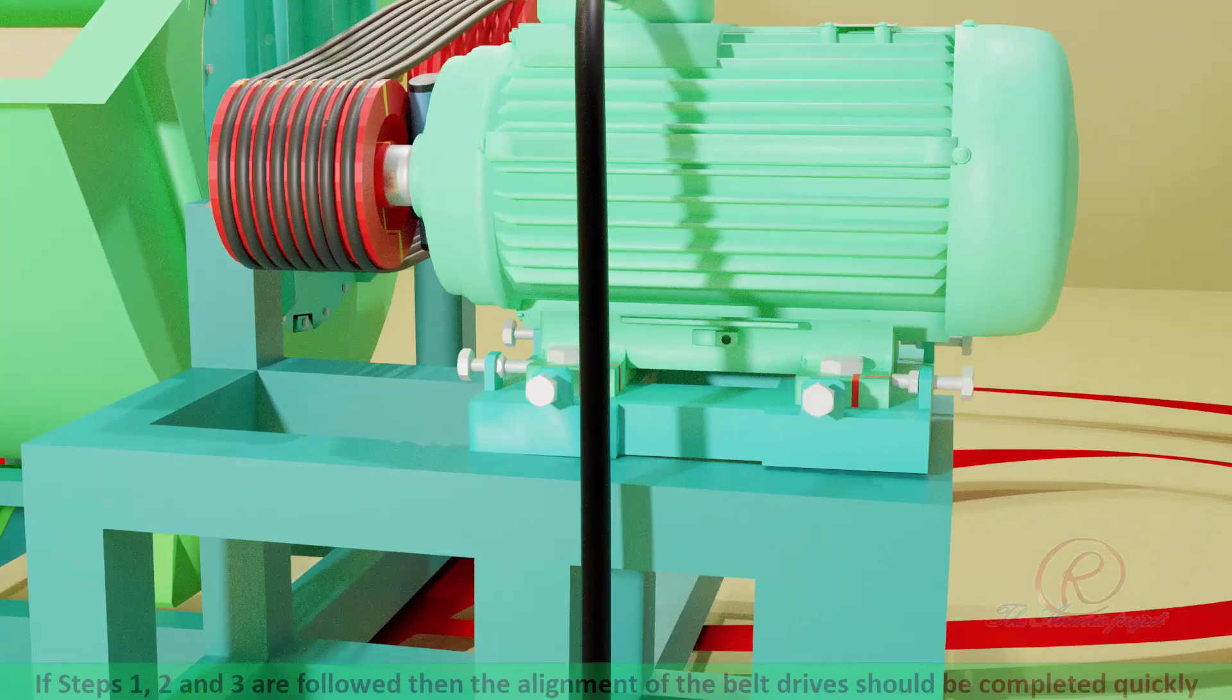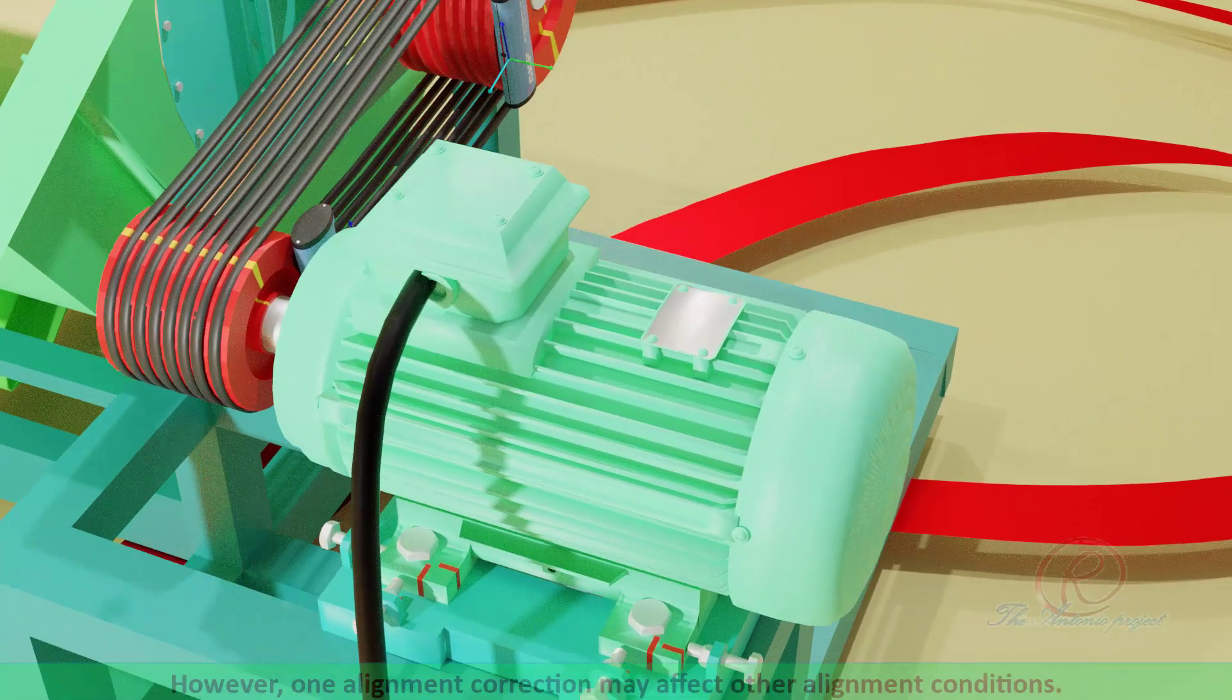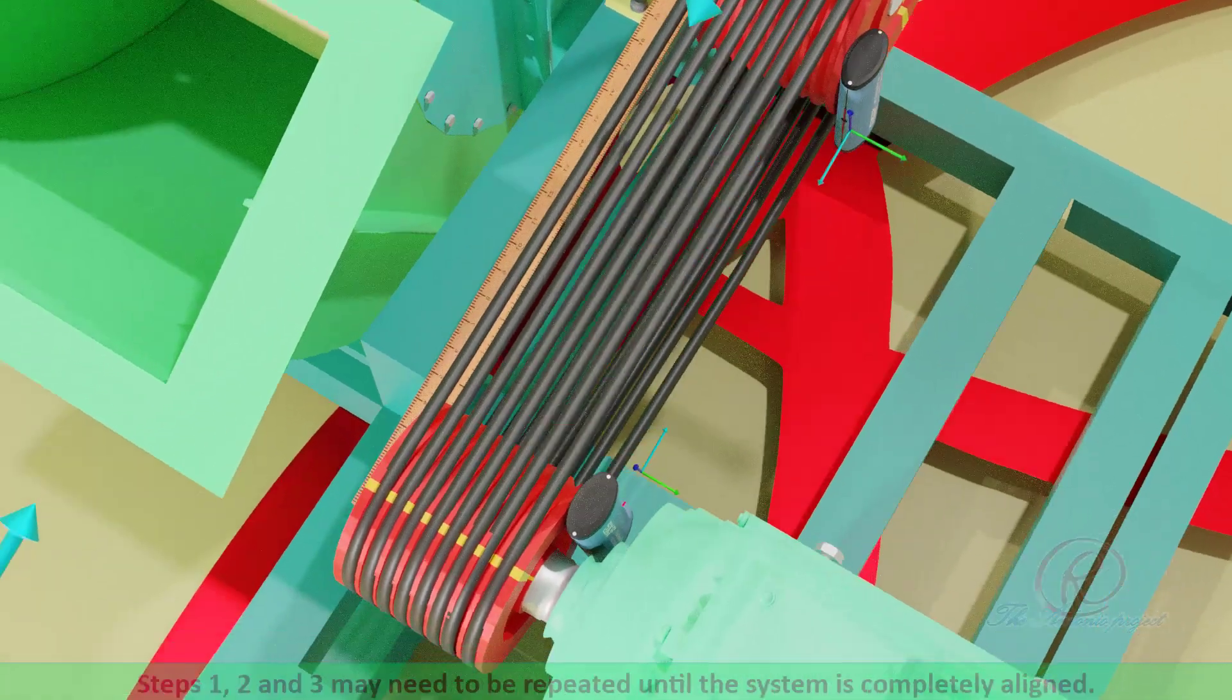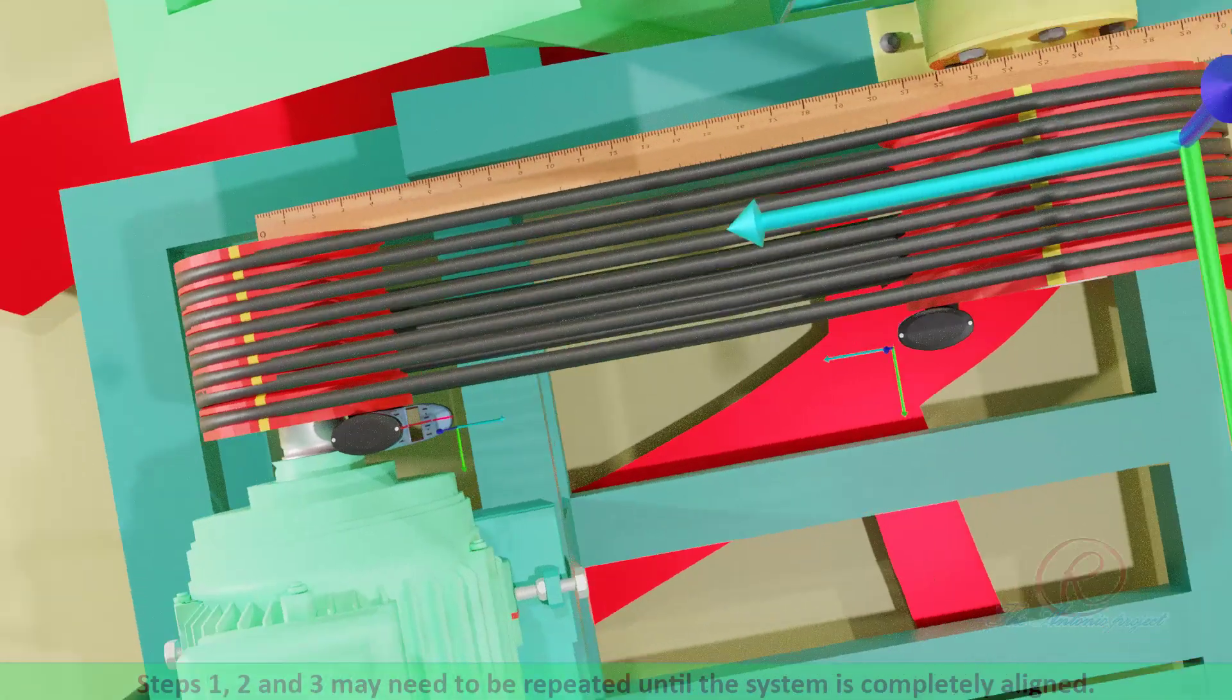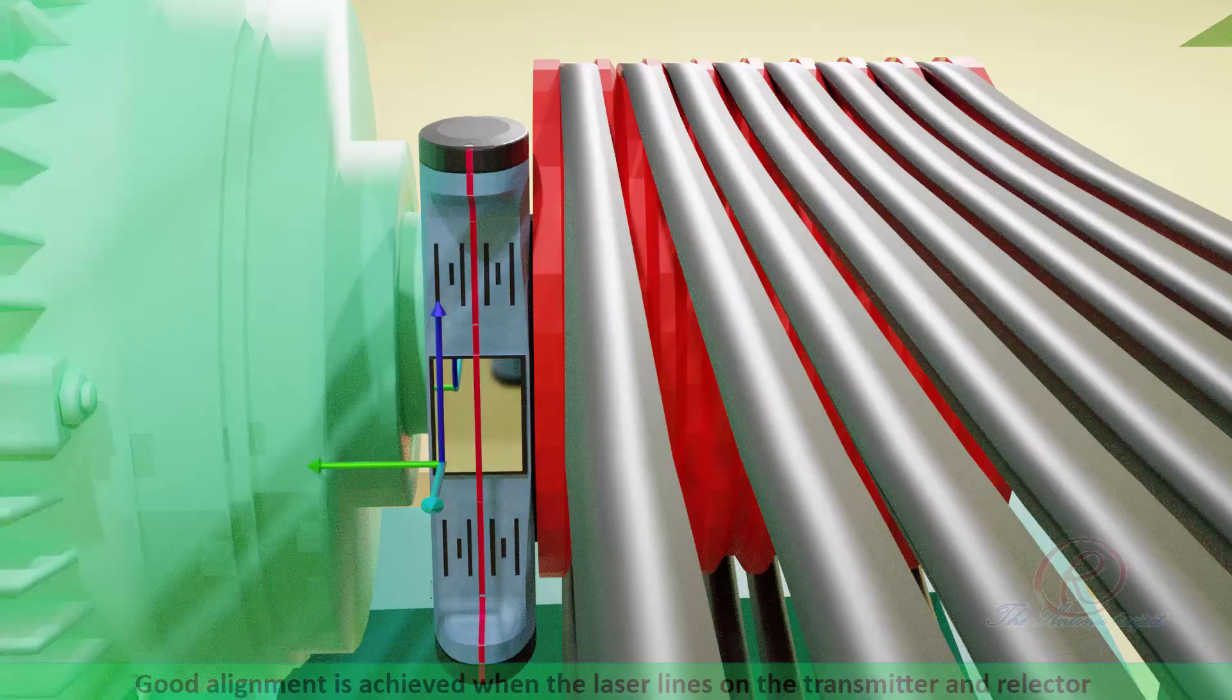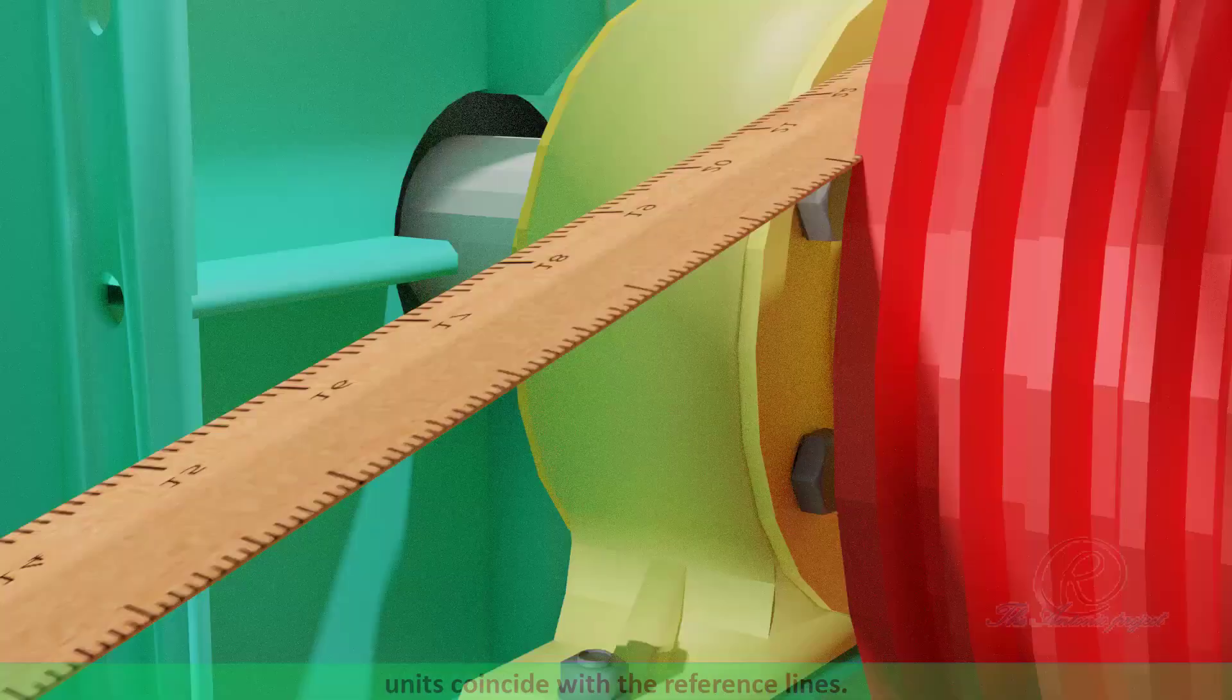If step 1, 2, and 3 are followed, then the alignment of belt drives should be complete quickly. However, one alignment correction may affect other alignment condition. Step 1, 2, and 3 may need to be repeated until the system is completely aligned. Good alignment is achieved when the laser line on the transmitter and reflector units coincide with the reference line.